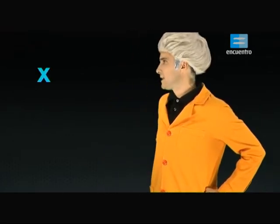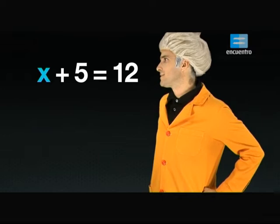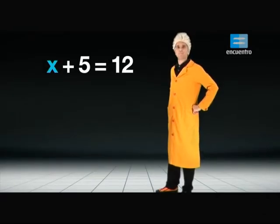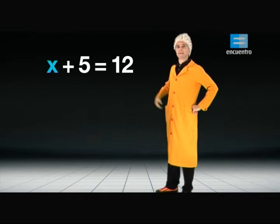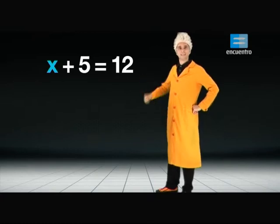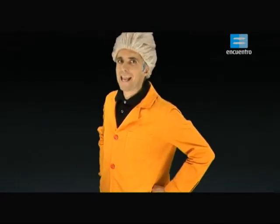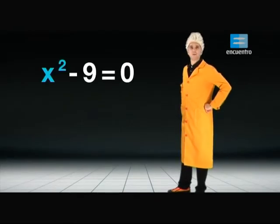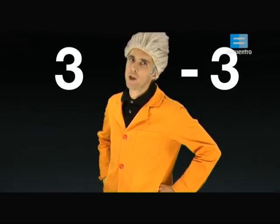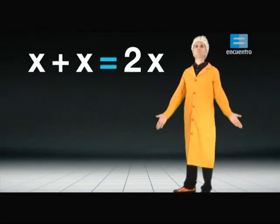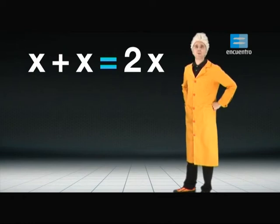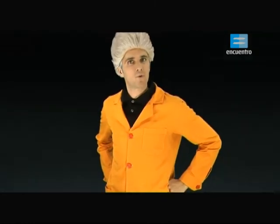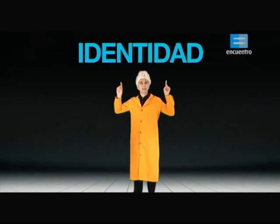Por ejemplo, en una ecuación como x más 5 igual 12, hay un único número que puede reemplazarse por la variable x que hace que la igualdad sea cierta. En cambio, en la ecuación x al cuadrado menos 9 igual 0, hay dos valores que pueden reemplazarse: 3 y menos 3. Cuando una igualdad se verifica para cualquier número, se la llama identidad.